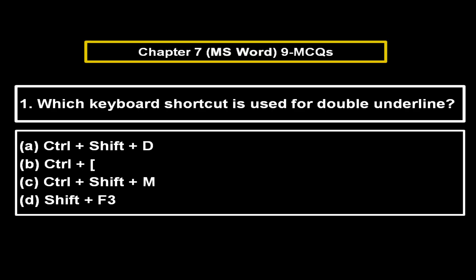Which keyboard shortcut is used for double underline? Option A: Ctrl+Shift+D. Option B: Ctrl+left angle bracket. Option C: Ctrl+Shift+M. Option D: Shift+F3. The right answer is Option A — Ctrl+Shift+D.